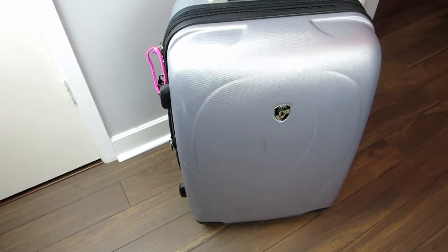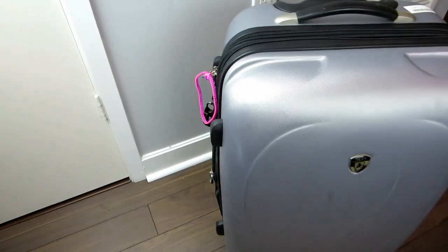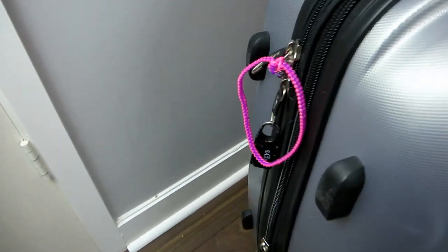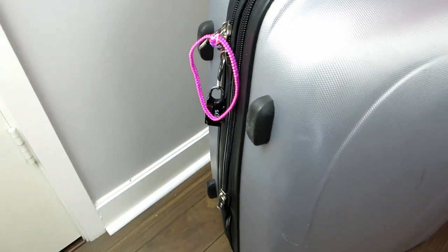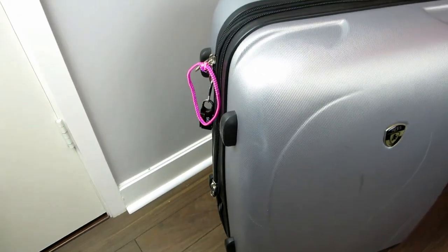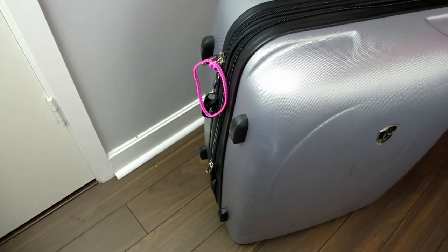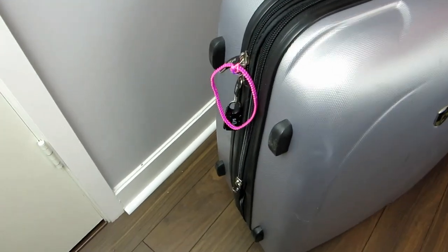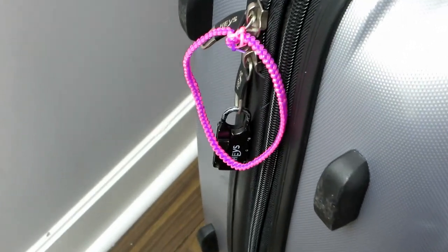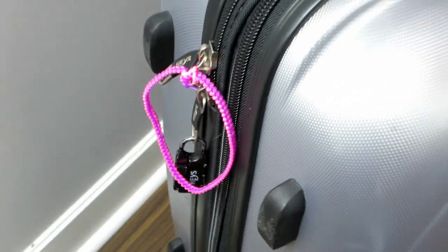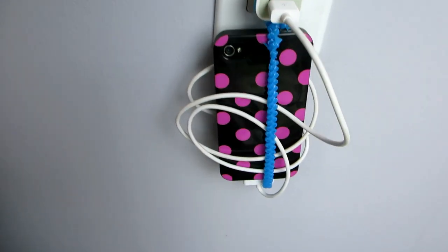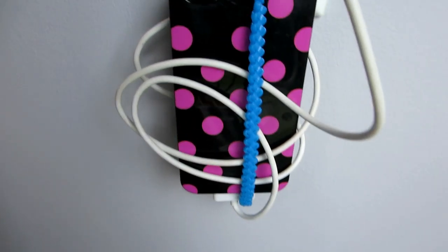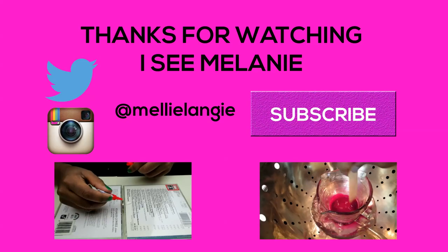You know when you're traveling by plane and you want to differentiate your suitcase from everyone else's, so when you get to baggage claim you know which one's yours right off the bat without having to sift through a sea full of black and gray suitcases? Well, slap on a butterfly gimp and you'll be good to go. And also, you can use a butterfly gimp as a phone holder. And if you click on the screen, you can see how you can do that.